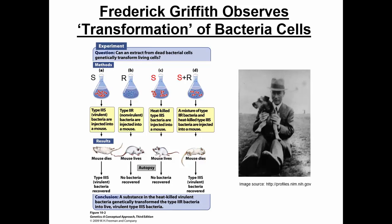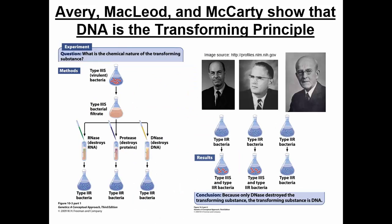Remember, our last column, column D, is our experimental group. Columns A through C are control groups. You should be able to walk someone through this experiment and show exactly how transformation occurred and what each control group was for. This next slide showed directly that DNA is the genetic material. You want to know the role of RNase, protease, and DNase — which of these three enzymes destroyed the genetic material and hence did not allow transformation to occur. Again, you want to be able to walk someone through the details of this experiment.